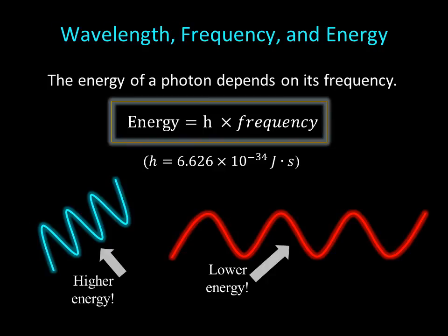H is known as Planck's constant, named for the physicist Max Planck, who researched radiation in the early 1900s.